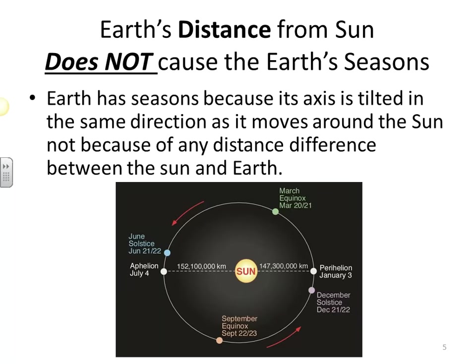One important thing to understand is that the distance the Earth is from the sun has nothing to do with the seasons whatsoever. In fact, an amazing truth is that in January, which is wintertime in the north, the Earth is actually closer to the sun. We're further from the sun in the summertime in the northern hemisphere, which further demonstrates that distance has nothing to do with the seasons at all.